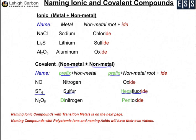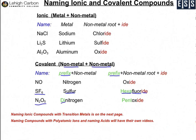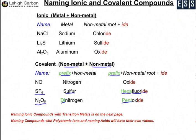Our final covalent example is N2O5. Here you need to use the prefix dinitrogen, and you're going to use pentoxide — your prefix, your root, and the IDE suffix.